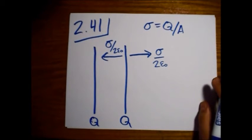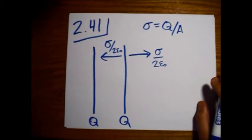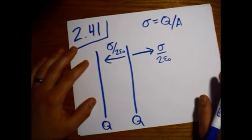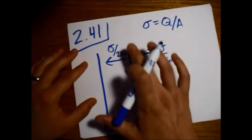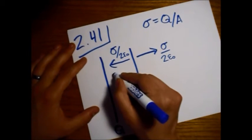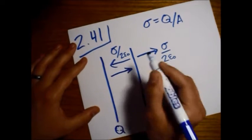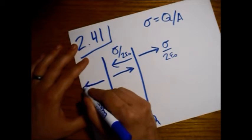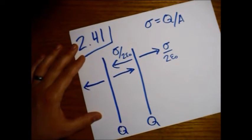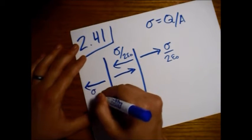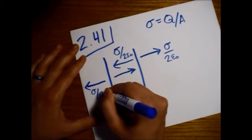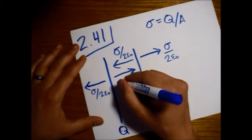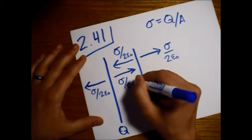To put it in terms of what's given to us in the problem. So we have that coming from this plate, and we have this also coming from this plate. Sigma over 2 epsilon-naught. Sigma over 2 epsilon-naught.